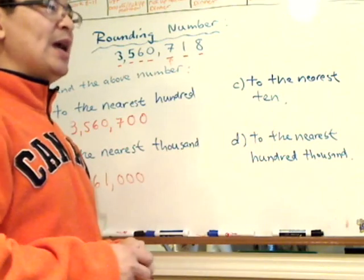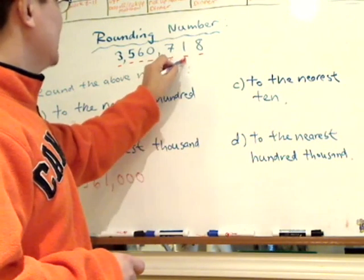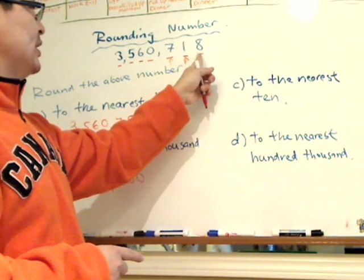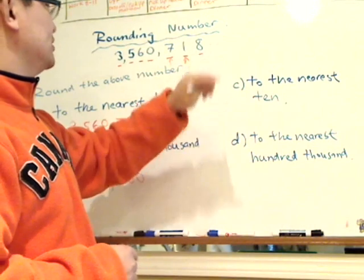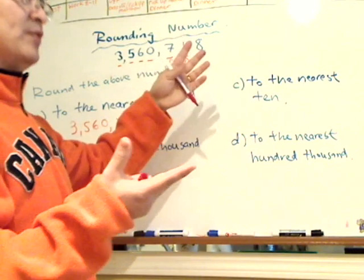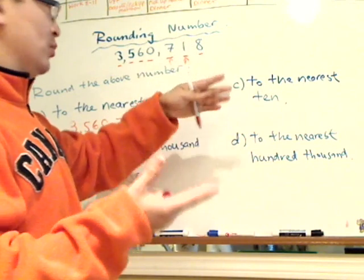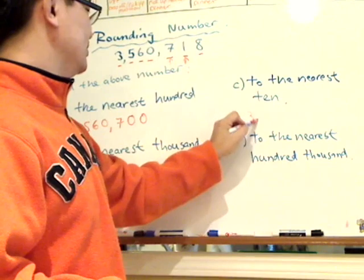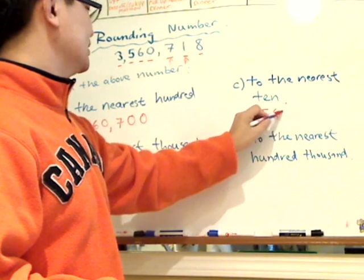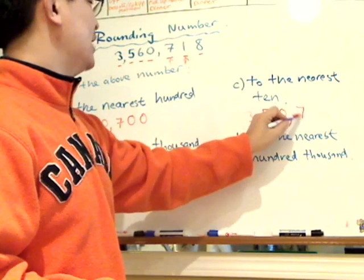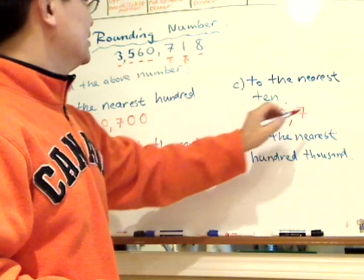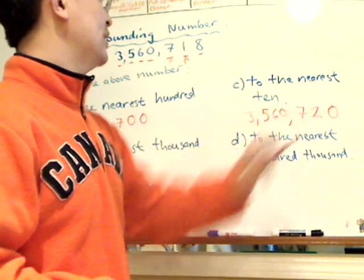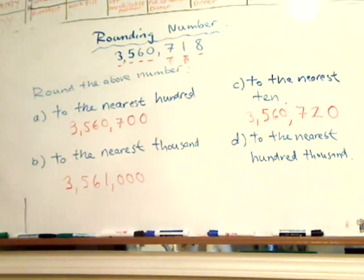Next question: to the nearest ten. Here's the tens place. We look at the number before that, which is eight ones. Eight is more than five, so we have to round up. It's going to be three million, five hundred and sixty thousand, seven hundred — and looking at that tens digit, since eight is bigger, it rounds up to seven hundred and twenty.